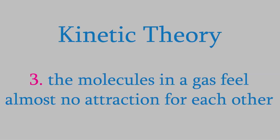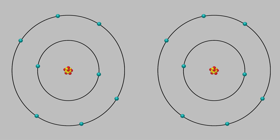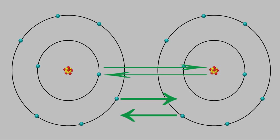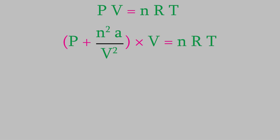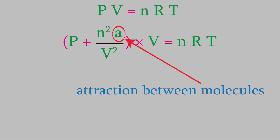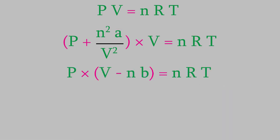The other assumption the kinetic theory makes is that the molecules don't attract or repel each other — this also isn't true. We know that all molecules contain protons and electrons, so the electrons in one molecule will repel the electrons in other molecules and attract protons in the other molecules. Because the molecules stick to each other when they're attracted, they collide with the walls of the container with more force, meaning the pressure will be higher than expected. To make the ideal gas law more accurate, we make a correction to the pressure equal to n² times a over V², where a is a number that tells us how much the molecules in a gas are attracted to each other.